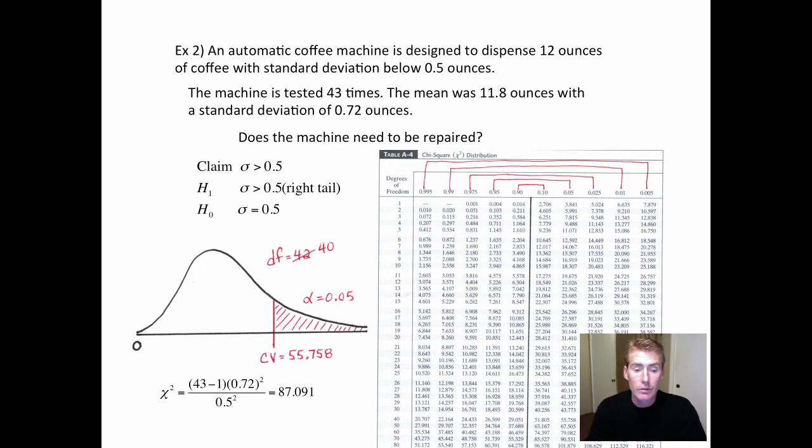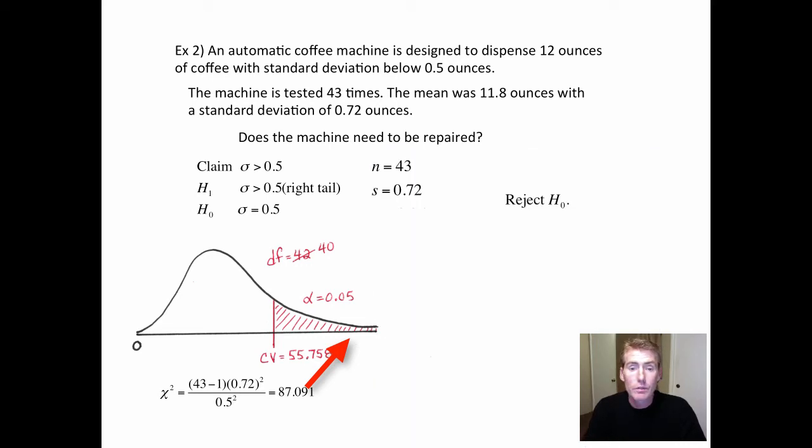Now we just do the formula for chi-squared. So this is the sample standard deviation squared. This is the number in the claim squared. Degrees of freedom goes right here. And then it turns out to be 87, which definitely goes past 55. So once again, we did prove something. So reject that it equals 0.5, which means that it's actually passed. So the 0.72 is proving, yes, it's definitely passed 0.05. So the claim is true. It's gone past what it's supposed to. So the machine does need to be repaired. Call someone out.